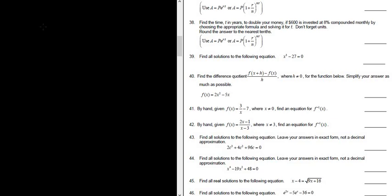Problem 41. By hand, given f of x equals 3 over x minus 7, where x is not equal to 0, find an equation for f inverse of x.